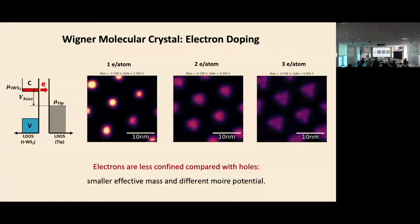On the electron side, we think the electron is likely at the K valley, so the potential is not as strong. We find one electron localizes, two electrons spread out a little, and three electrons show a triangle-like configuration, but it is not as obvious as the hole side. The difference is basically the effective mass and the Moiré potential are slightly different between the electron and the hole sides.